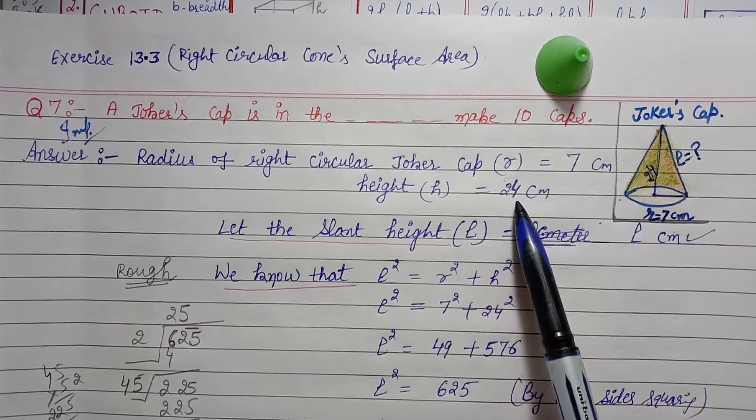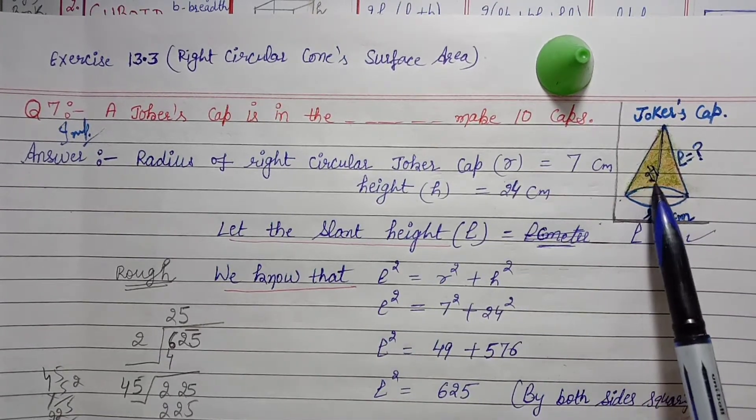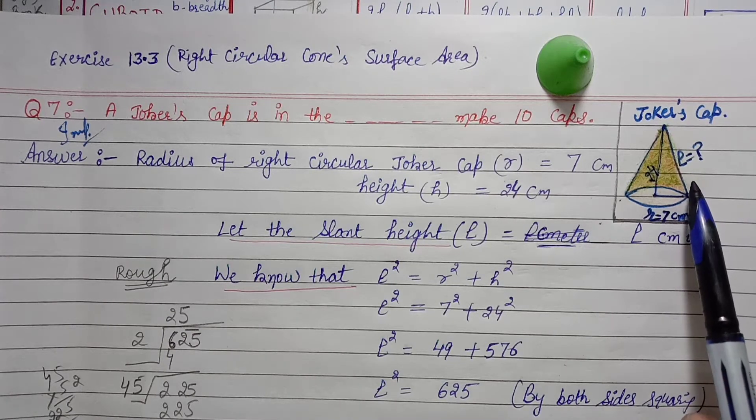The radius of the circular joker cap is 7 cm, height is 24 cm. Then we have to find the slant height, and then we have to find the curved surface area. We need the curved surface area because the sheet covers the surrounding area. We'll find out 10 such caps. I'll draw two lines, then one line gap, then we'll find the slant height L in centimeters.